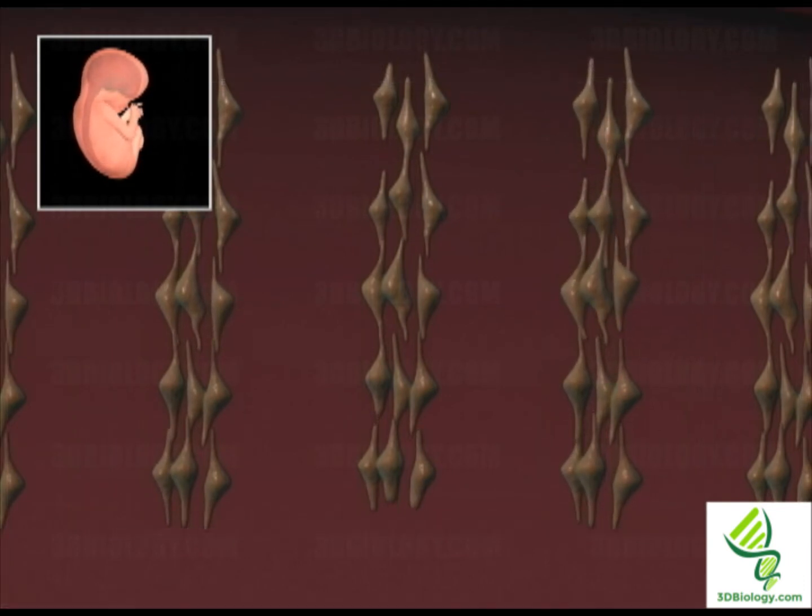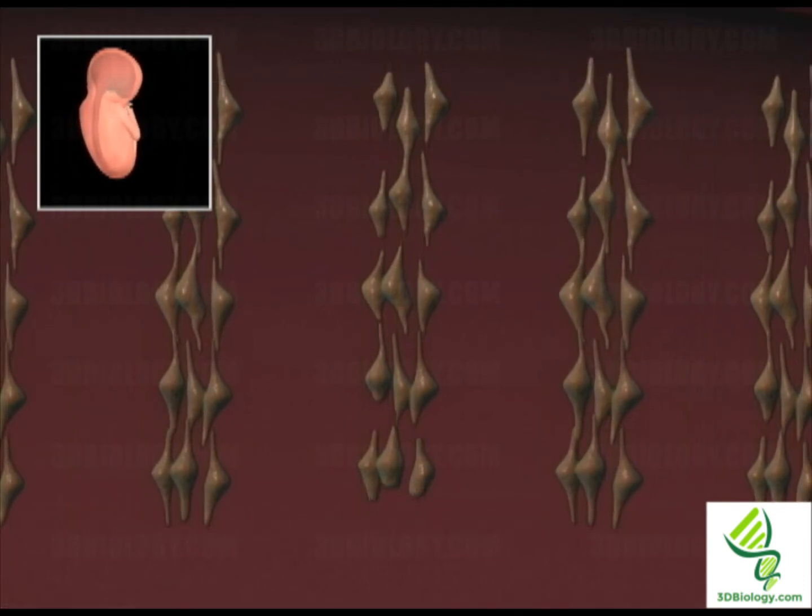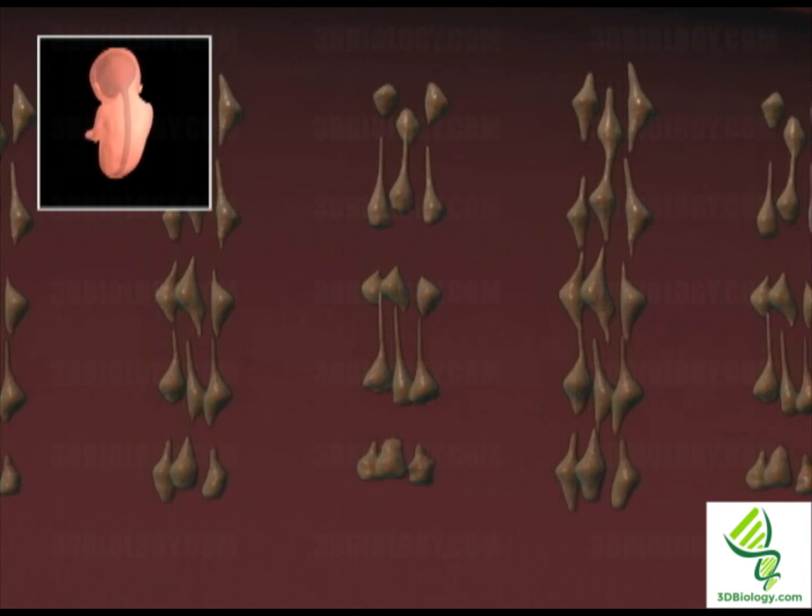Neurons that have reached the cortical plate grow and differentiate into granular and pyramidal cells and form the five layers of the cerebral cortex.